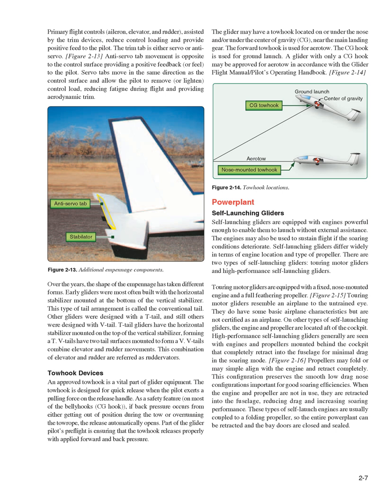Over the years, the shape of the empennage has taken different forms. Early gliders were most often built with the horizontal stabilizer mounted at the bottom of the vertical stabilizer — this type of tail arrangement is called the conventional tail. Other gliders were designed with a T-tail, and still others were designed with a V-tail. T-tail gliders have the horizontal stabilizer mounted on the top of the vertical stabilizer, forming a T. V-tails have two tail surfaces mounted to form a V. V-tails combine elevator and rudder movements. This combination of elevator and rudder is referred to as ruddervators.